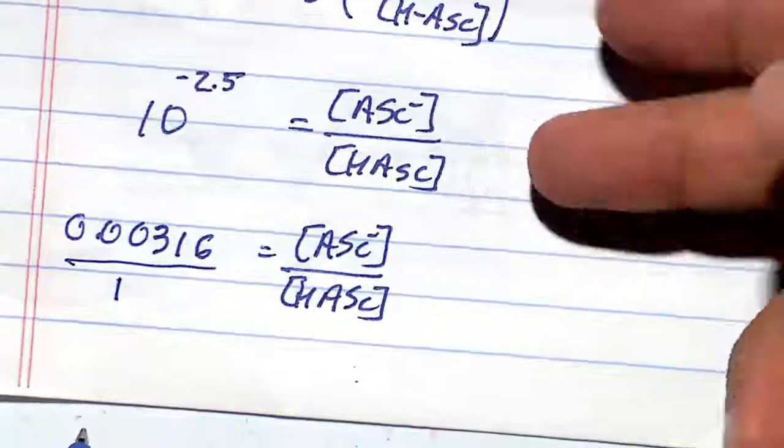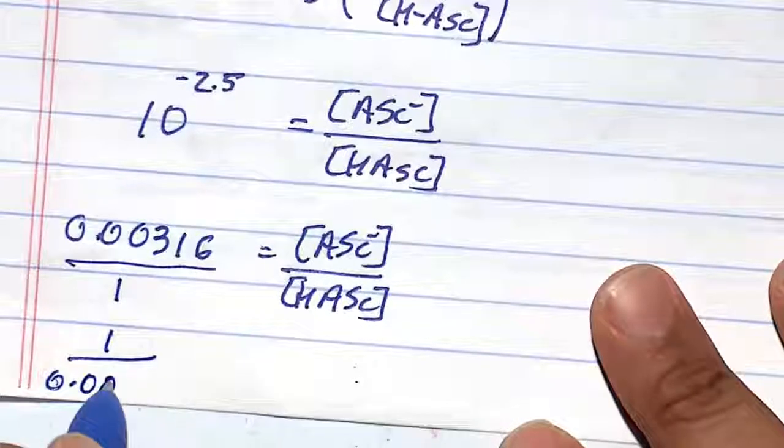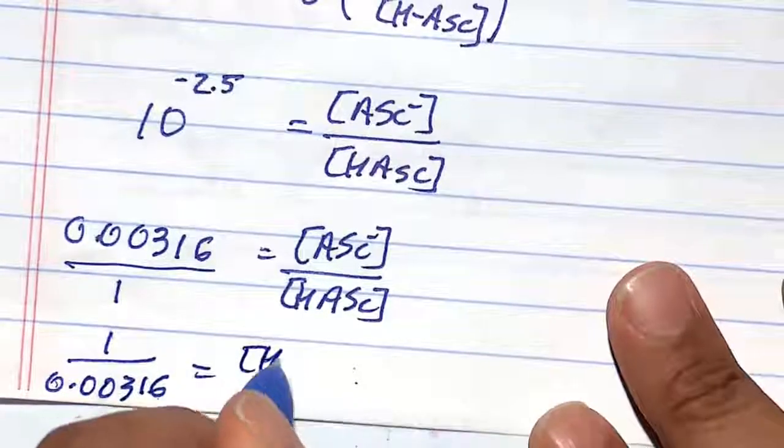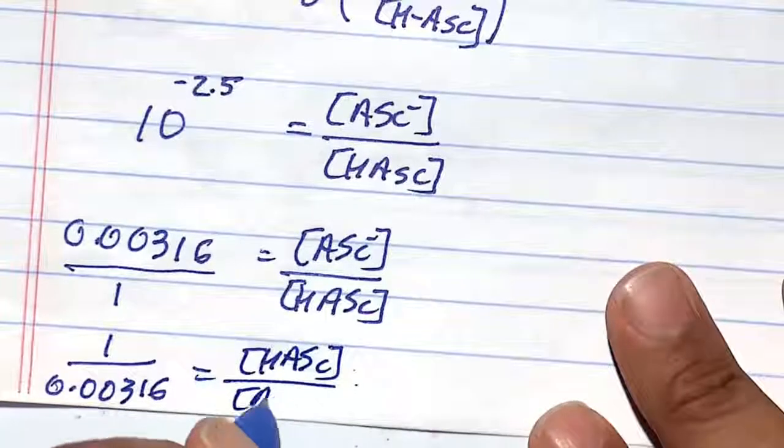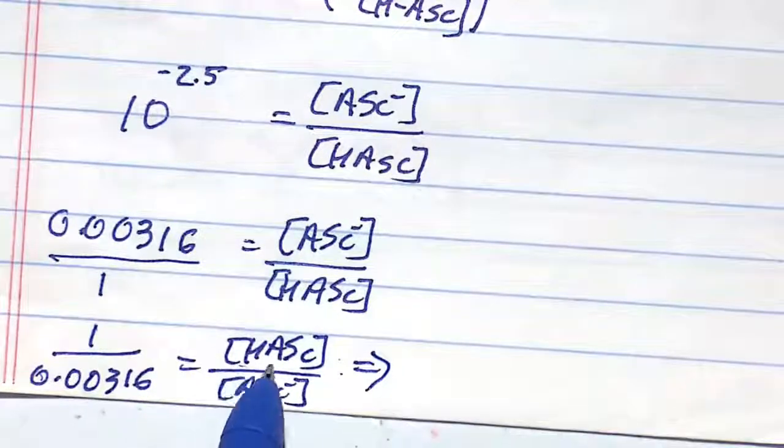If we flip this ratio, I can do 1 over 0.00316 equals acetylsalicylic acid divided by acetylsalicylate. The acid form is about 316 times more.